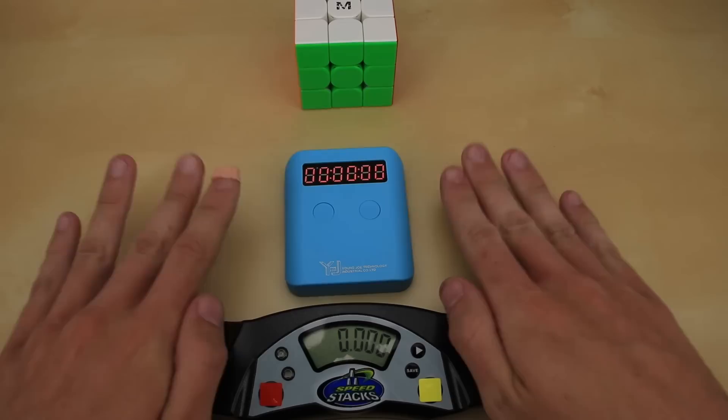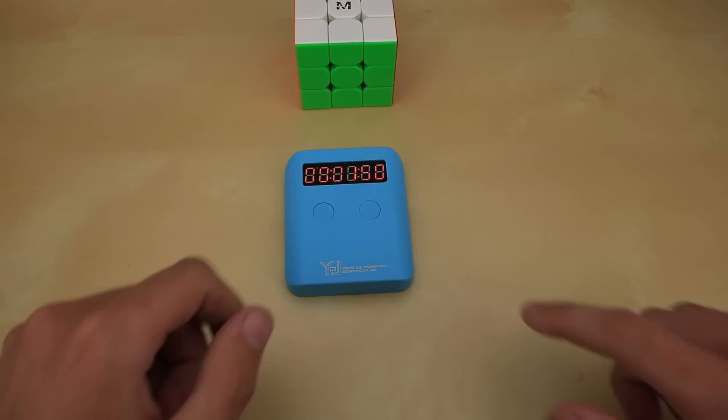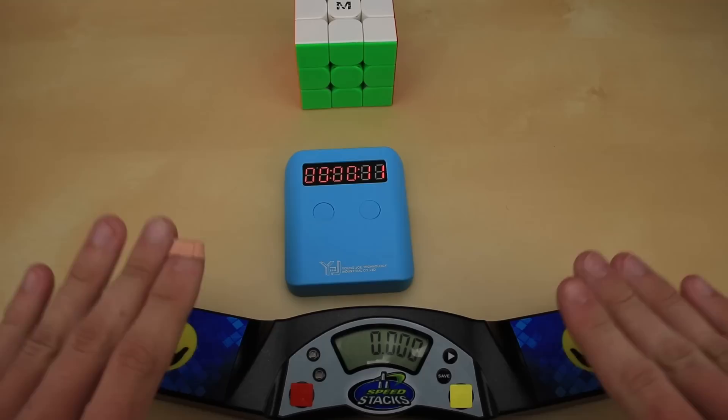Start and stop, and as you can see it acts pretty much exactly the same as a stack mat. You put your hands down on the side, hold it there for a second, lift up, solve your puzzle, and then put it back down. I believe the only difference is that on this timer you don't actually have to wait a second; you can just start immediately, whereas on a stack mat you do have to wait a second before starting to solve.